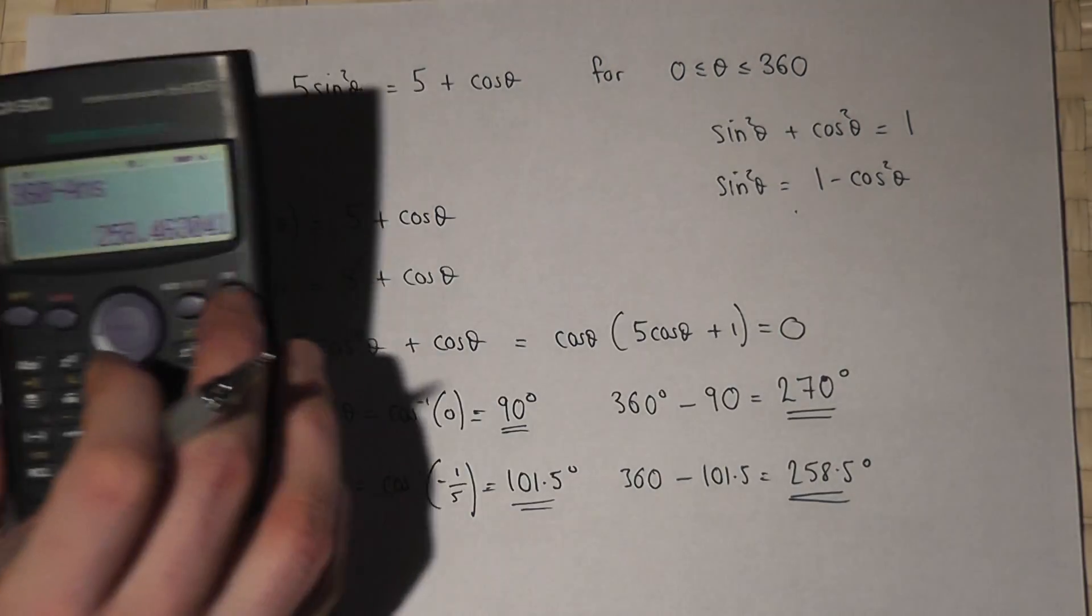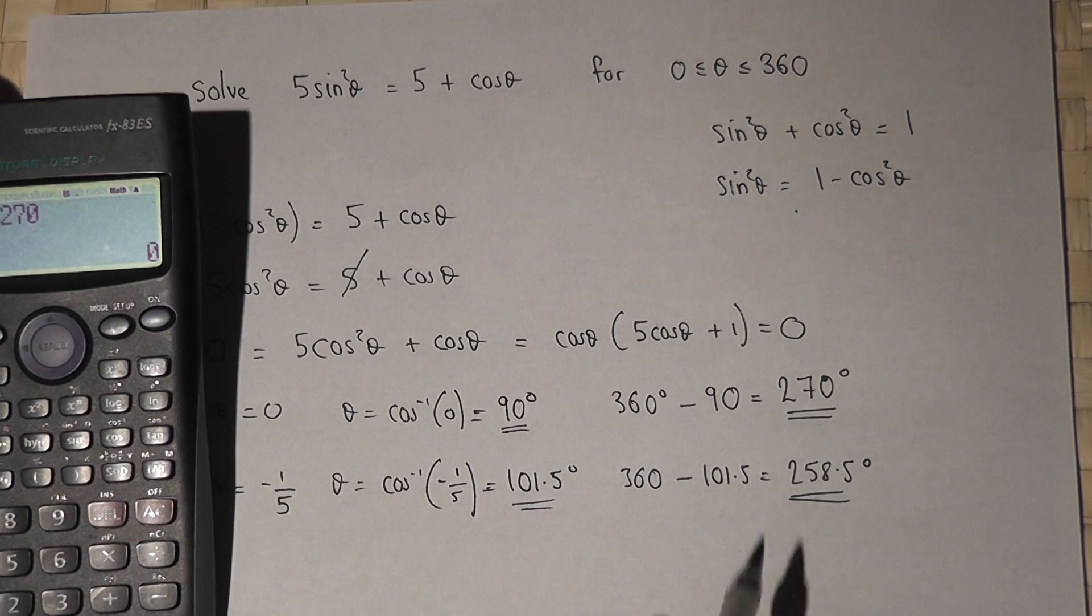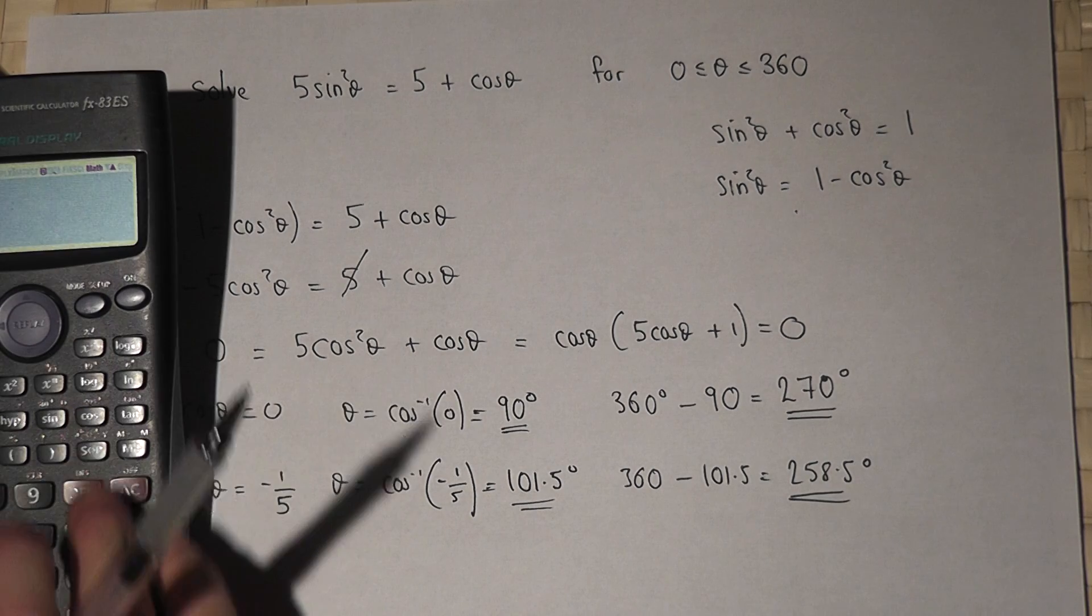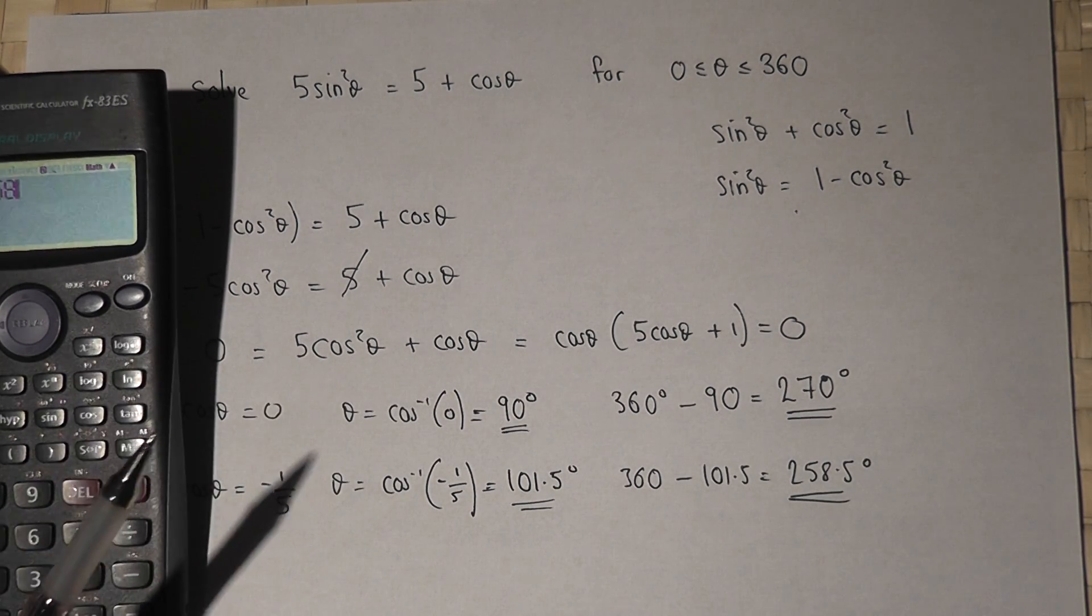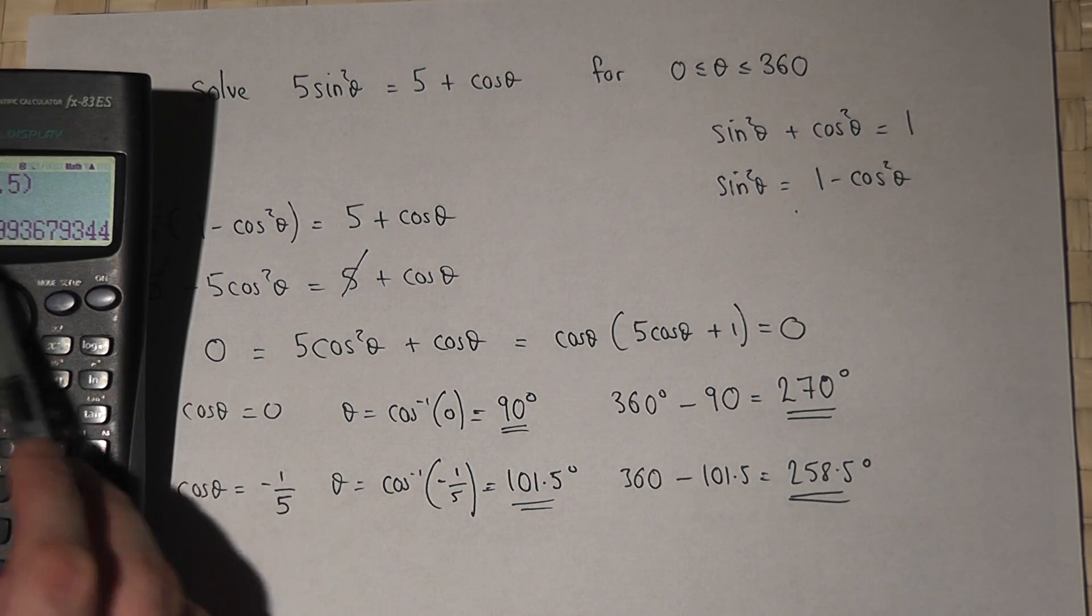Now, just to show that this is the case, if you do cosine of 270, we do indeed get 0, and if we do cosine of 258.5, we do indeed get minus 1 fifth approximately, with a bit of rounding error.